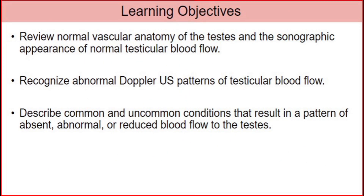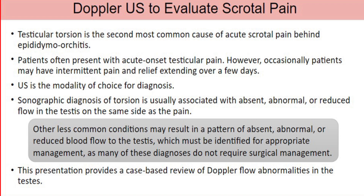Introduction. Testicular torsion is the second most common cause of acute scrotal pain behind epididymal orchitis. Patients often present with acute onset testicular pain; however, occasionally patients may have intermittent pain and relief extending over a few days. Ultrasound is the modality of choice for diagnosis. Sonographic diagnosis of torsion is usually associated with absent, abnormal, or reduced flow in the testes on the same side as the pain. Other less common conditions may result in a pattern of absent, abnormal, or reduced blood flow to the testes, which must be identified for appropriate management, as many of these diagnoses don't require surgical management.